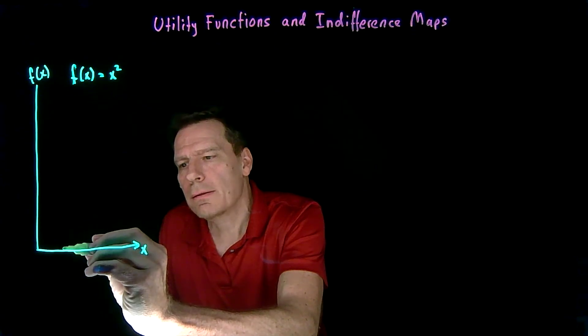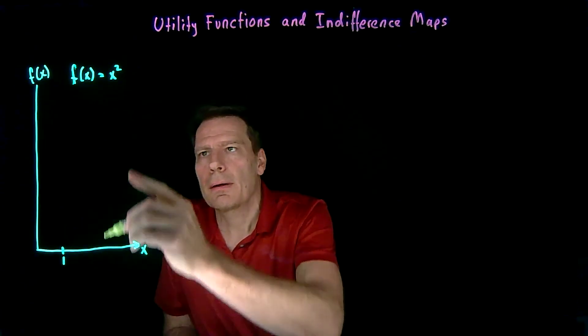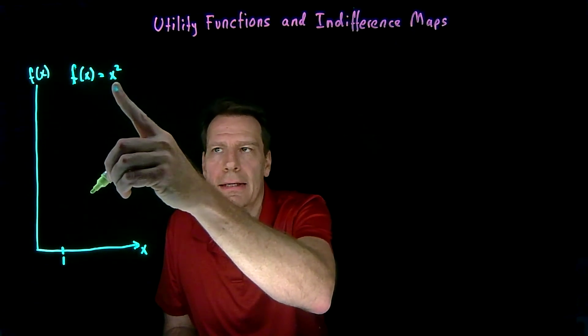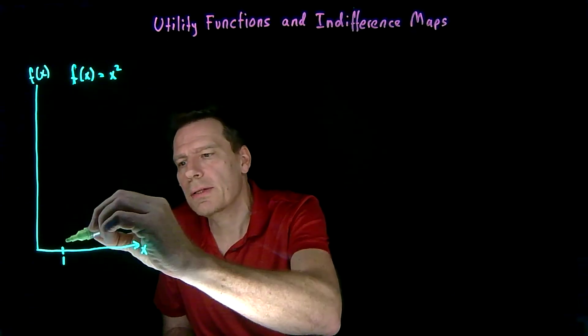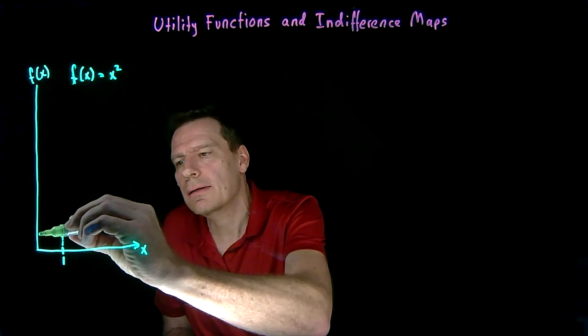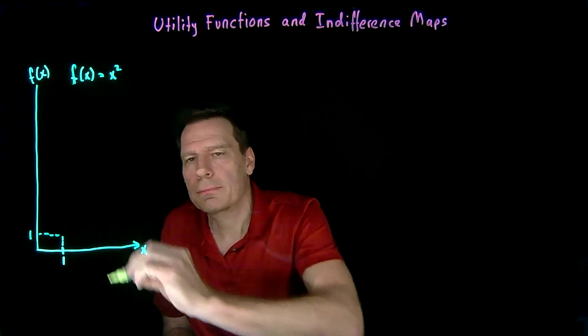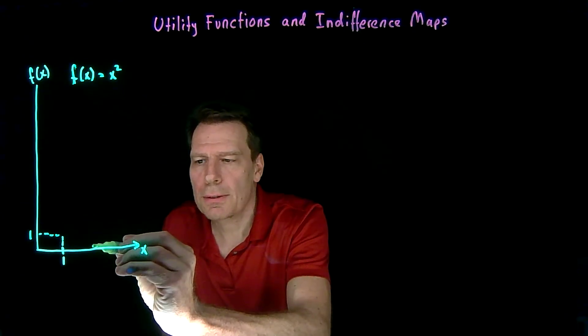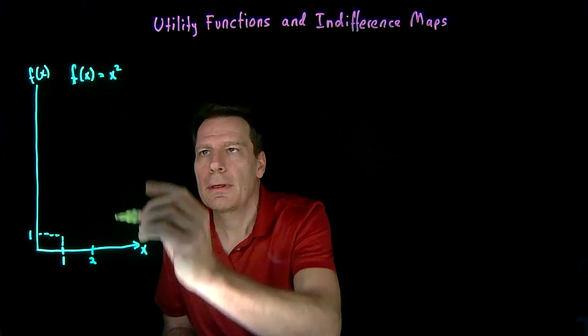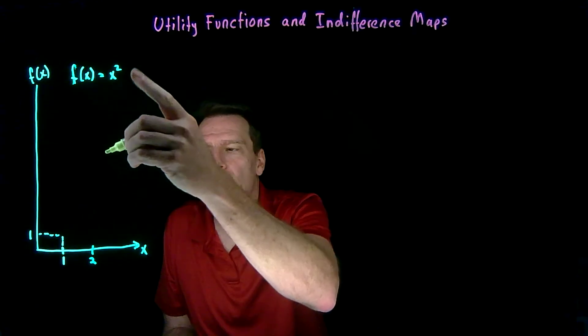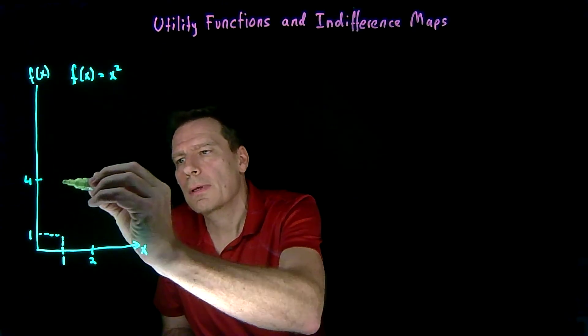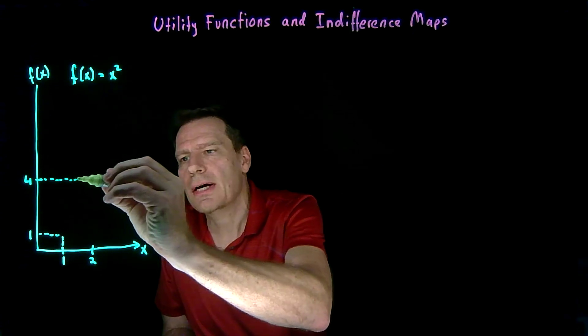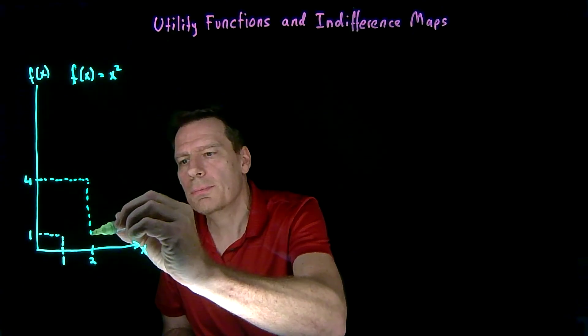We could take the point 1, plug that number in for x, 1 squared is just 1, so that point would be assigned the number 1. We could take the point 2, plug 2 in here, 2 squared is equal to 4. And so that would tell us that we're assigning the number 4 to this point.